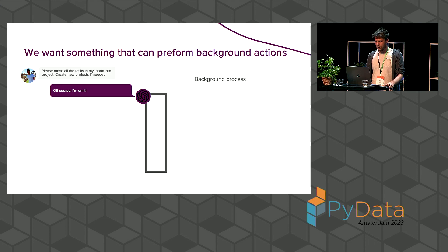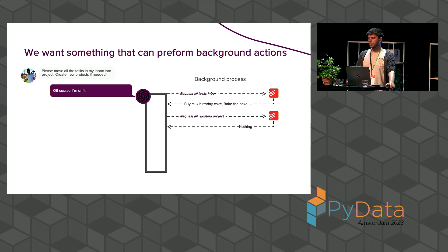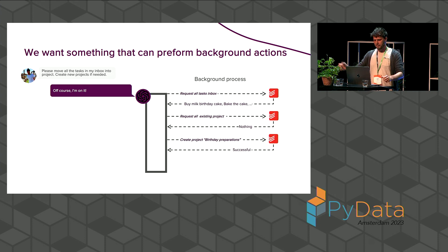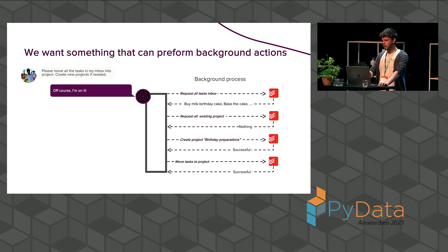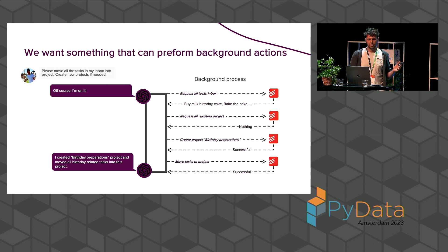...it should say something like "of course, I'm on it." And in the background, it should ask for all the tasks in my inbox, get a nice list, then based on that response make a request for all existing projects. If nothing is there, it should decide to create a new project. Then the API confirms successful, it moves all the tasks to that specific project, and gives a small summary of what it actually did. That's the ideal way we want it to act.